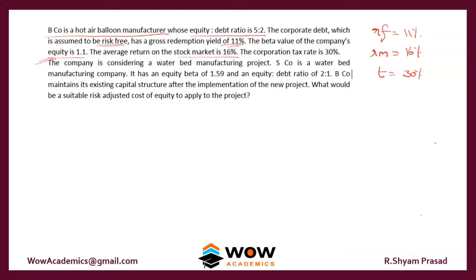The company is considering a waterbed manufacturing project. Yesco is a waterbed manufacturing company. It has an equity beta of 1.59 and an equity-to-debt ratio of 2 to 1. Bico maintains its existing capital structure after the implementation of the new project. The question is: what would be a suitable adjusted cost of equity to apply to the project?